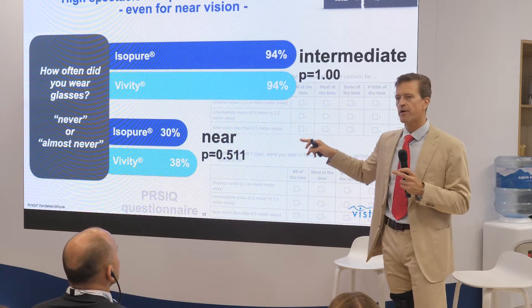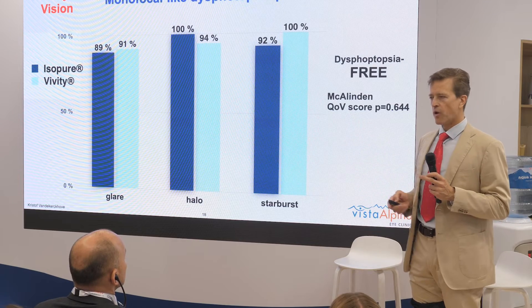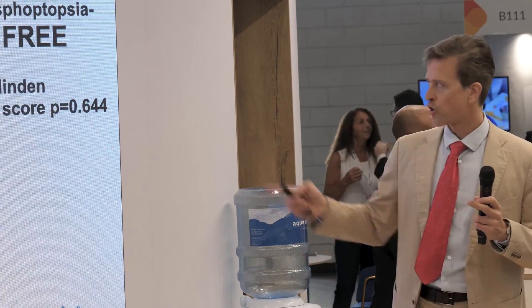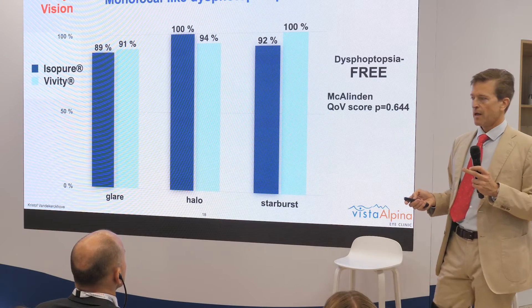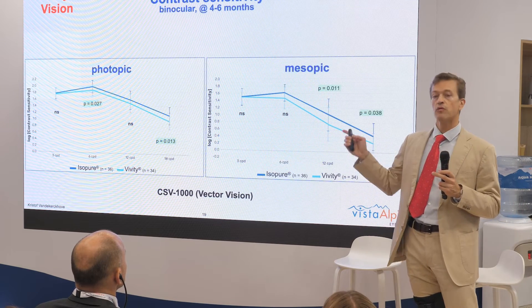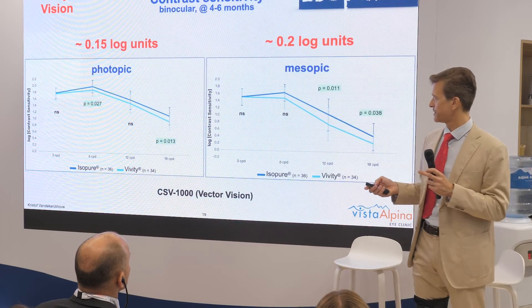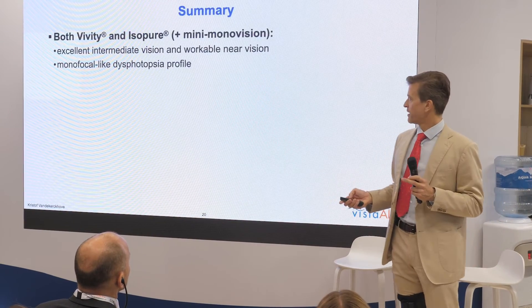Regarding quality of vision, very reassuringly, both lenses had a very good dysphotopsia profile — actually similar to a monofocal lens — with no difference whatsoever according to the MacLinden analysis. However, for contrast sensitivity we saw a difference in favor of isopure: 0.15 log units in photopic conditions and 0.2 log units in mesopic conditions. Generally, a difference beyond 0.1 log units can be considered clinically relevant.